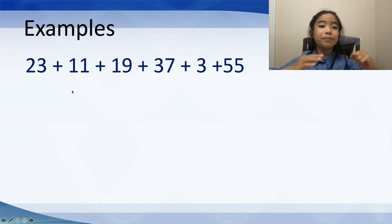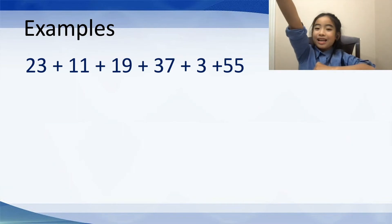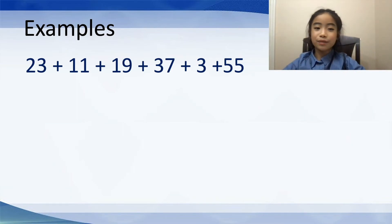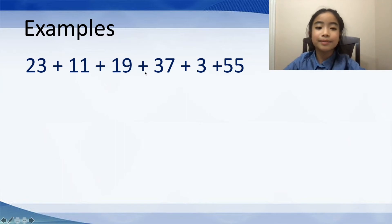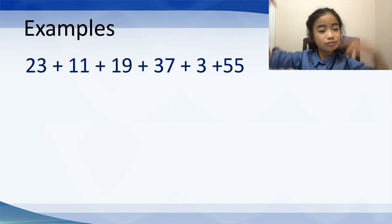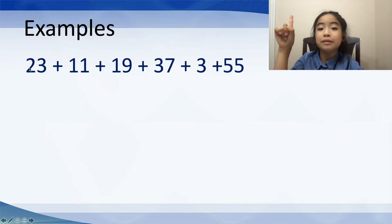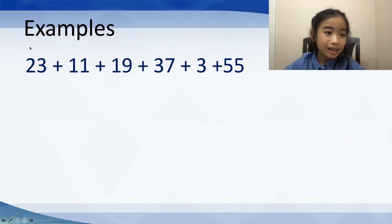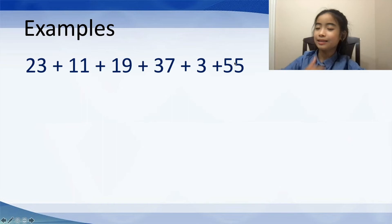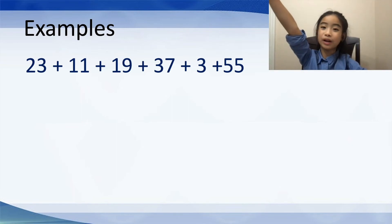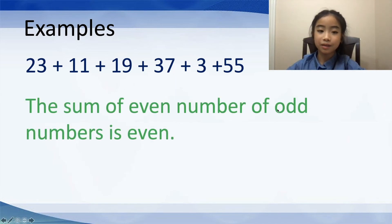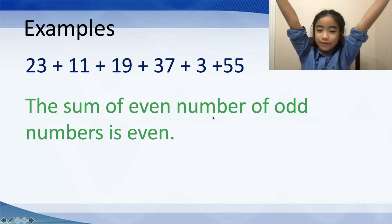Now let's look at some examples. The rules are the same — no calculating, and you have to figure out whether the result is even or odd. First, we have 23 plus 11 plus 19 plus 37 plus 3 plus 55. All of them are odd numbers. Let's count how many odd numbers we have: 1, 2, 3, 4, 5, 6 — that's 6 odd numbers, which means we have an even number of odd numbers. So the sum of an even number of odd numbers is even. The result is even.